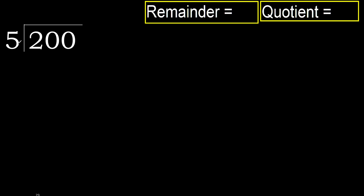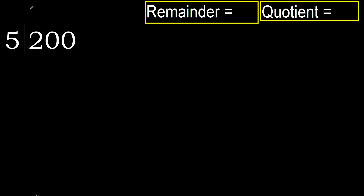200 divided by 5. 2 is less, therefore next. 20 is not less, therefore with 20: 5 multiplied by which number is nearest to 20, but not greater? 5 multiplied by 5 is 25, which is greater. Multiply by 4: 20 is not greater, ok.